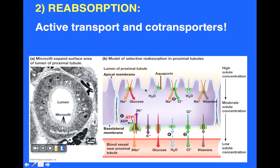Looking at a section through the proximal tubule: the lumen is the middle region surrounded by epithelial cells of the tubule. The filtrate is located in the lumen, an epithelial cell of the proximal tubule is in the middle, and a blood vessel — part of the vasa recta — is below. The question is: how do we move specific things from the filtrate back into our bloodstream so these components are retained within our bodies?